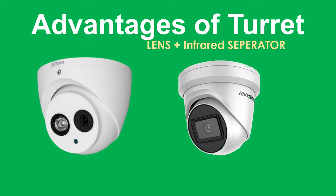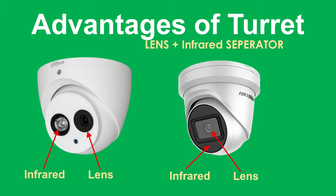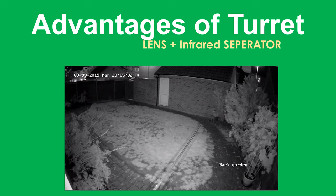Another advantage of the turret: the lens and infrared are separated by a different ring, which prevents something known as IR bleed. Looking at the images, those two circles on the first camera — the first is infrared and the other is the lens. On the second camera, you can see the lens in the middle with an almost rectangular piece separating the infrared from the lens. That gives you a nice infrared image as shown.